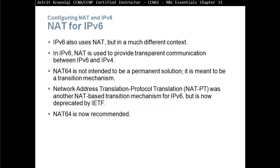IPv6 also uses NAT but in a much different context — for transparent communication and transition between IPv4 and IPv6. NAT64 is not intended to be a permanent solution; it is a transition mechanism. Network Address Translation Protocol Translation (NATPT) was another NAT-based transition mechanism, but it has been deprecated by IETF. NAT64 is now the recommended approach.